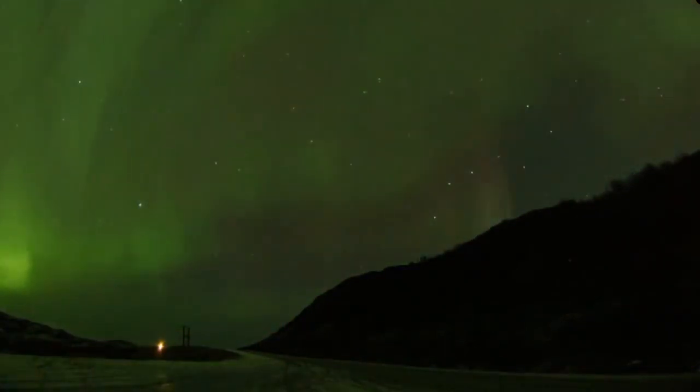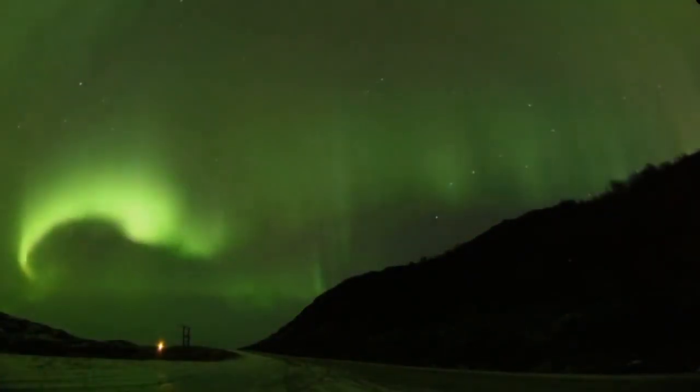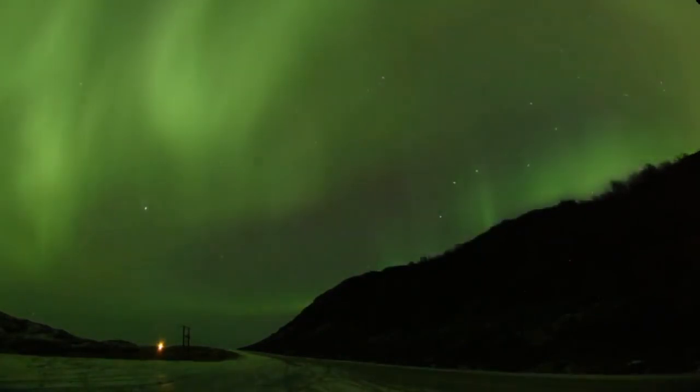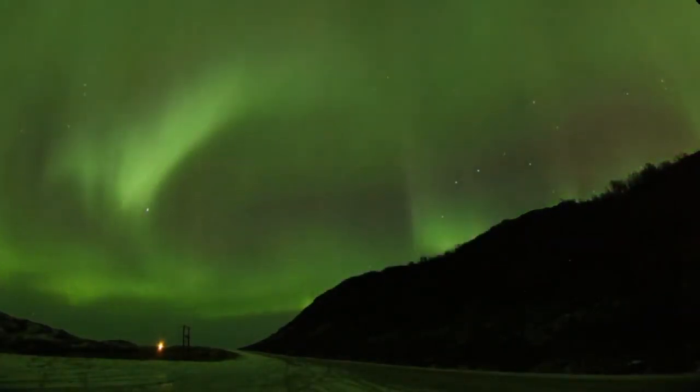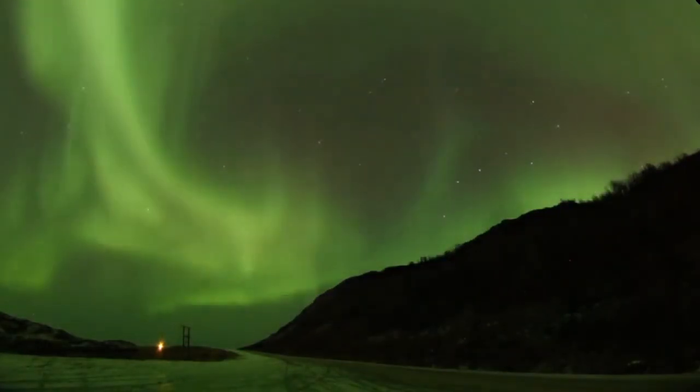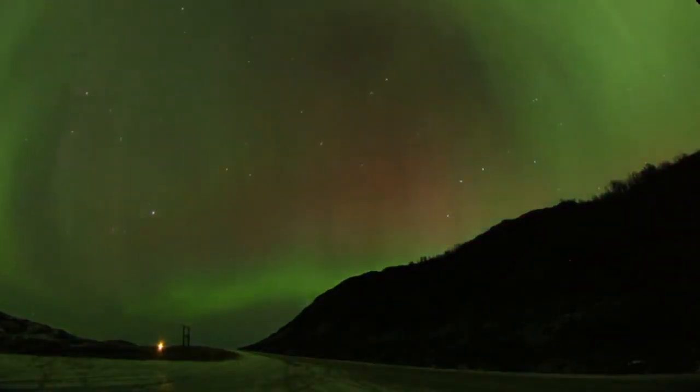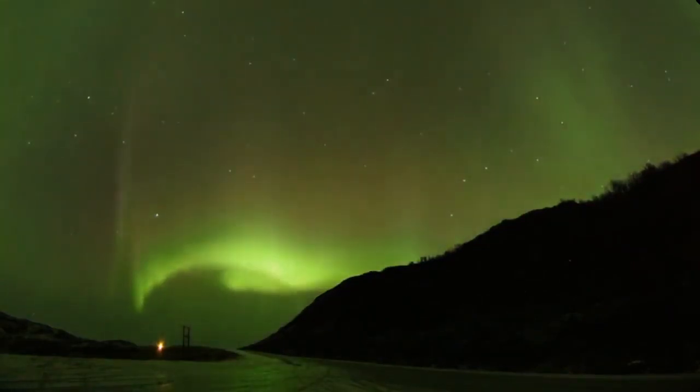Auroral rays follow the lines of force in Earth's magnetic field. Oxygen atoms emit a green light when hit by high-energy electrons. Low-energy electrons, higher in the atmosphere, cause oxygen atoms to glow red, giving the green aurora its red tip. These wispy auroras show us that our magnetic shield is still intact.